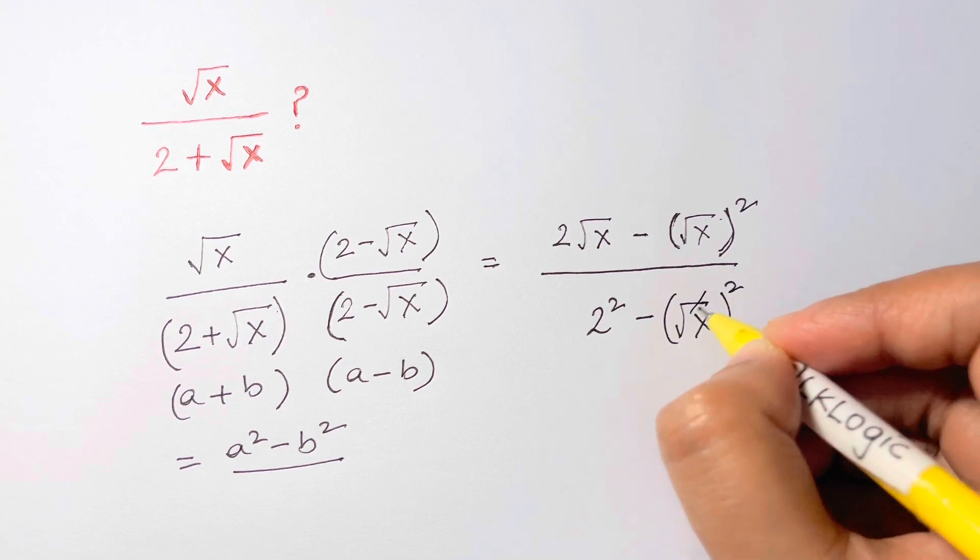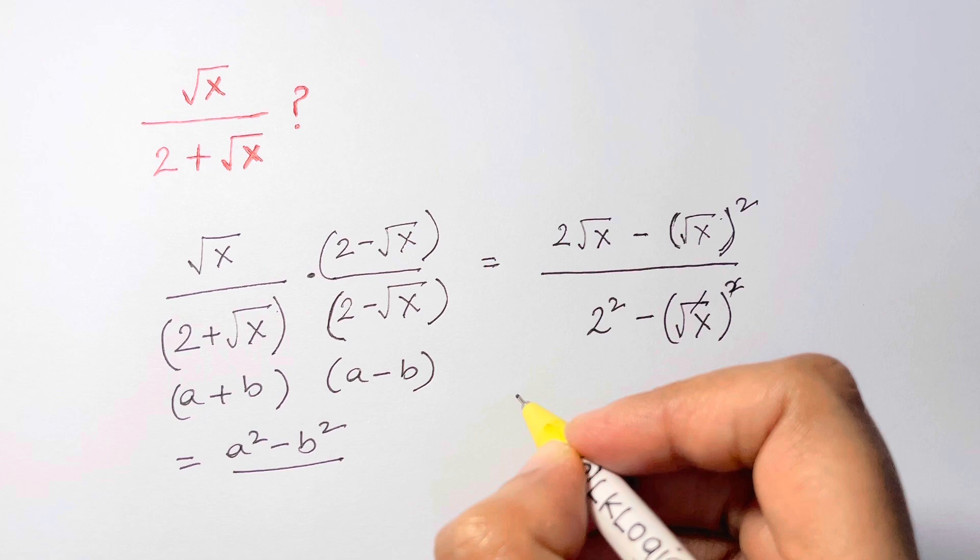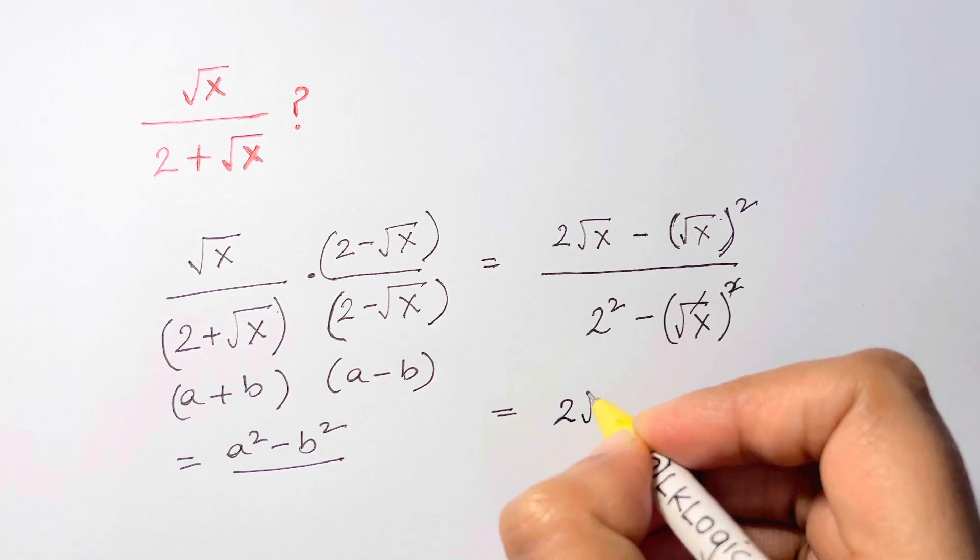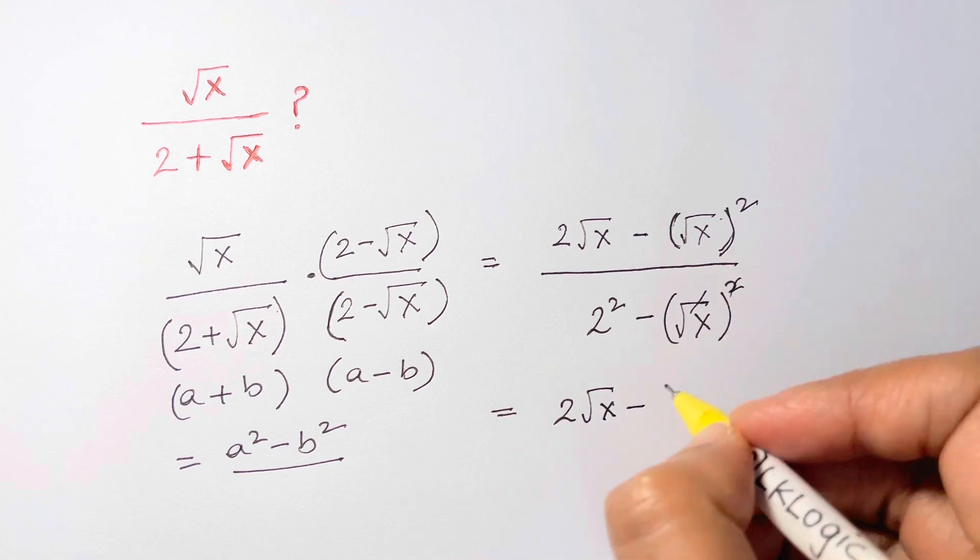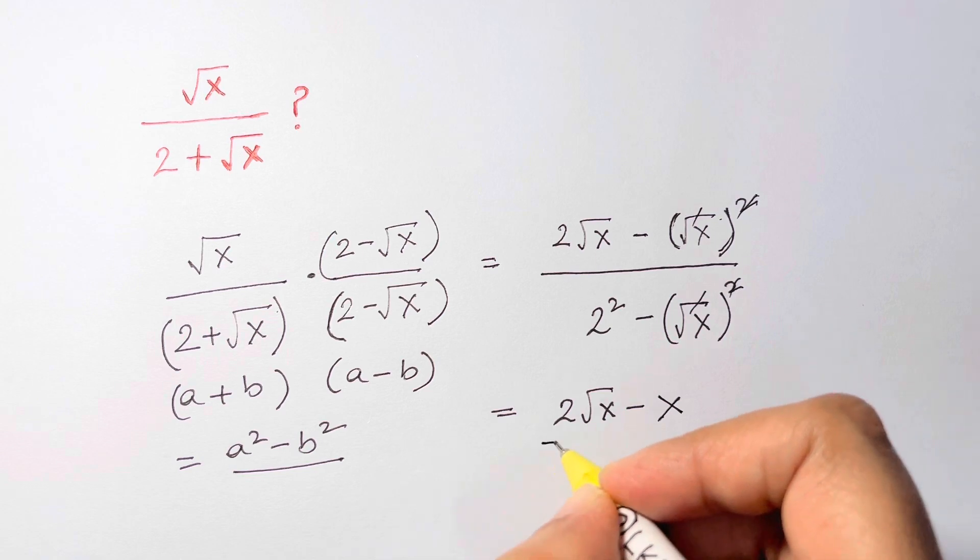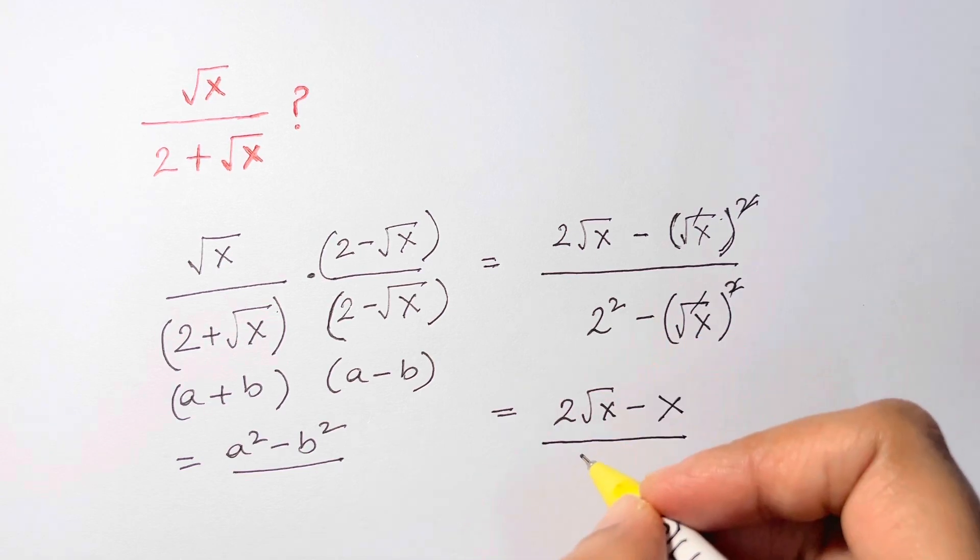So square root and square gets cancelled here, so we have a minus x over 2 squared is 4 minus x. And that's your answer.